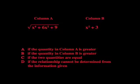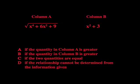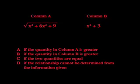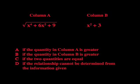Which do you think is larger, the square root of x to the fourth plus 6x squared plus 9, or column B, x squared plus 3?